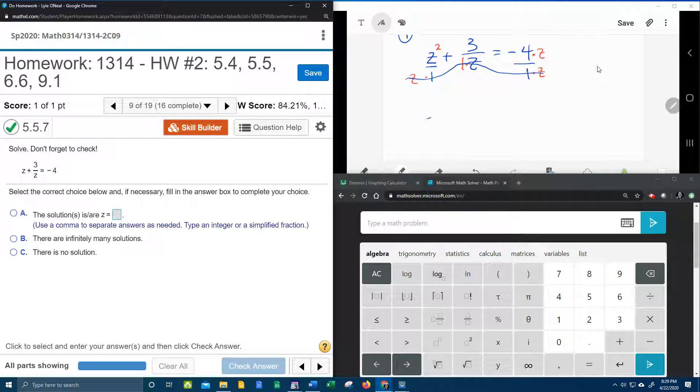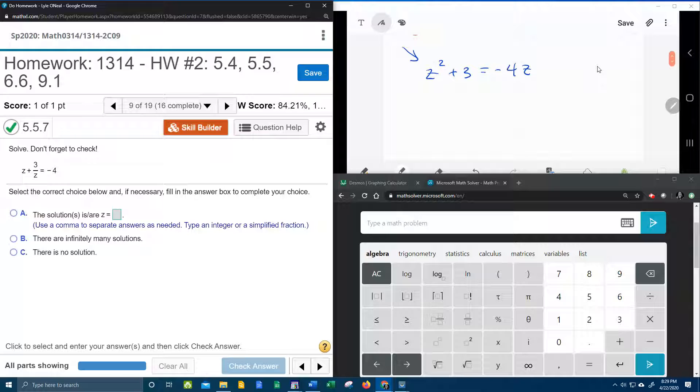Alright so what does that leave me with? I've got z squared plus 3 equals negative 4z. And now I need you to notice that we do have a z squared, and that makes the equation quadratic, which means I need to set it equal to 0. So we're going to bring the negative 4z over, giving me z squared, that's going to become plus 4z plus 3 equal to 0.